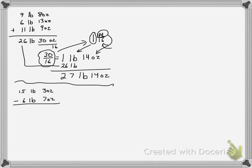Subtraction is perhaps the trickiest idea because of borrowing. If we have 15 pounds 3 ounces and want to subtract 6 pounds 7 ounces, I start with the smaller unit. I cannot subtract 7 ounces from 3 ounces, so I need to borrow. I take away one pound, making it 14 pounds. That 1 pound is equivalent to 16 ounces, added to the 3 ounces I had, giving 19 ounces. Now subtracting: 19 minus 7 leaves 12 ounces, and 14 minus 6 is 8 pounds.